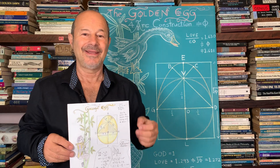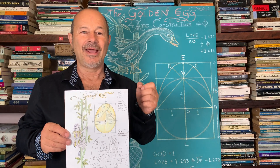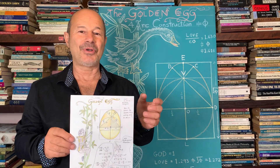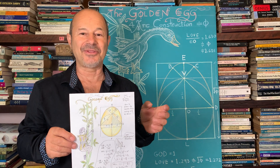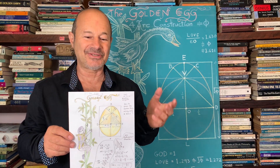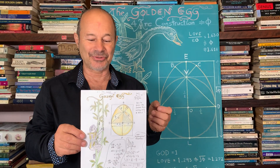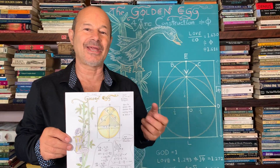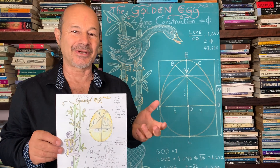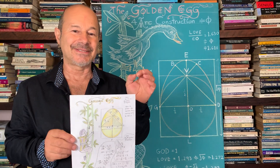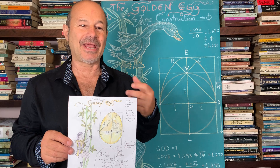Hi everybody. Today I'd like to share with you a very well-known fable called Jack and the Beanstalk. Most of us had this read to us as children, but did you know that embedded in the story is some cosmic information about the golden egg?